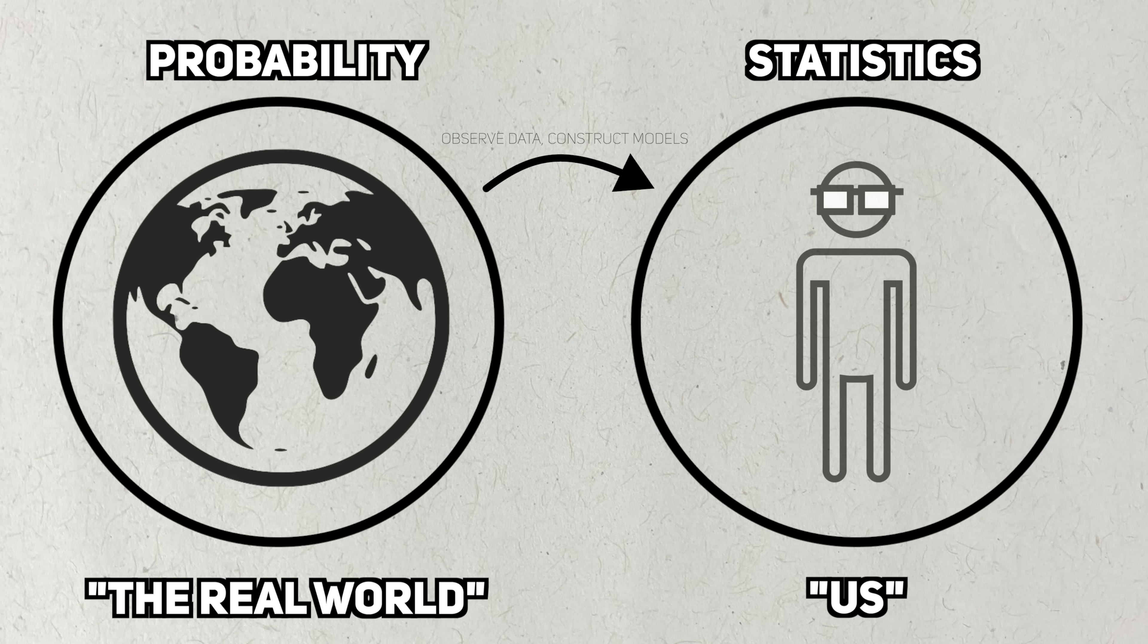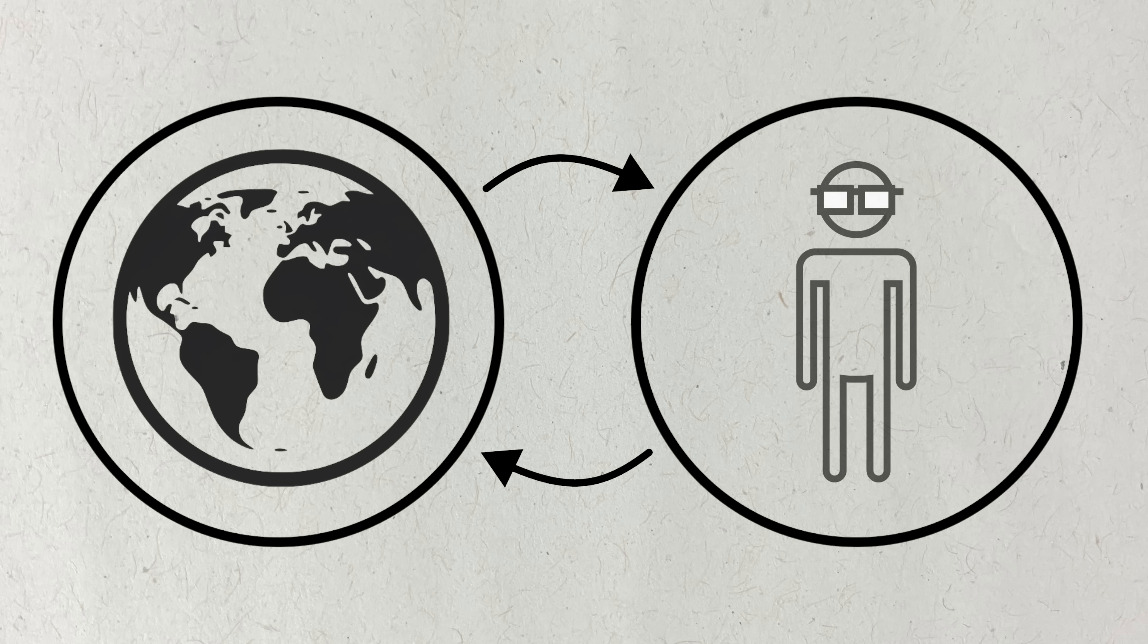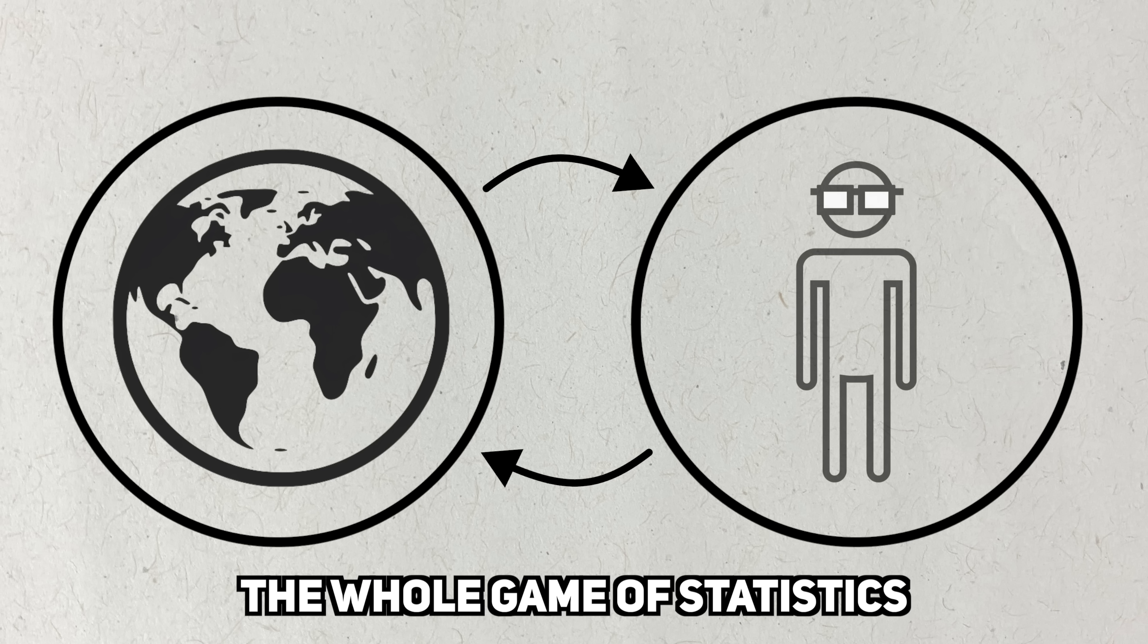And these parameters represent aspects of the data generation process we want to know more about. This side can be thought of as being governed by statistics. Based on the data we collect, we create educated guesses about the parameters. We use these estimates to learn more about the data generating mechanism. Based on what we learn, we can perform more experiments and gather more data and continually refine our understanding of the world. This cycle of gathering data and making inferences on it is the whole game of statistics, and it sets a stage for why Monte Carlo simulations are so important.